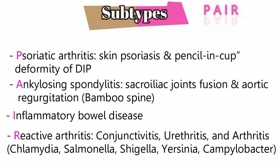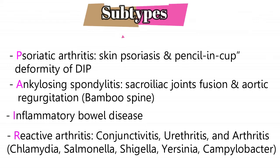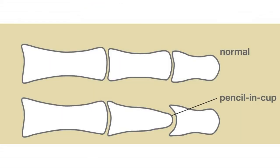So those are the four diseases that can cause seronegative spondyloarthritis with the symptoms we described. Here's how the pencil-in-cup appearance looks. Alright, that's everything — hopefully this video made it easier for you. See you guys later.